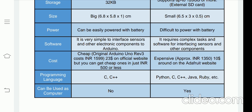The supported programming languages for Arduino are C and C++. In the case of Raspberry Pi, the major support is Python, but along with Python you can also write code in C, C++, Java, Ruby, etc. In case of Arduino, only C and C++ can be used for coding.